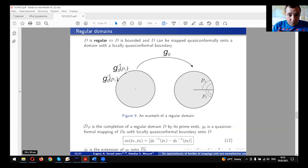The completion of a regular domain D by its prime ends we denote by D̄'. We observe that this space is a metric space. We may introduce the metric in the space of prime ends by the following rule.